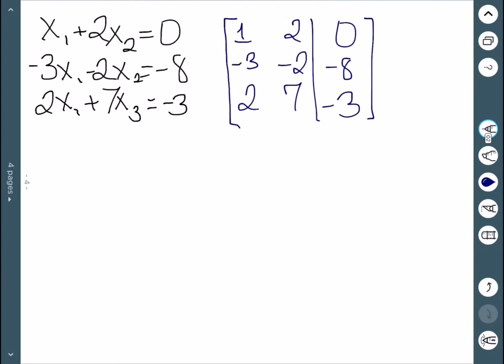Since we already have a 1 in the first row, first column, we need to get zeros underneath it. To get rid of the 3, we'll do 3 times row 1 plus row 2. And to get rid of the 2, we'll do negative 2 row 1 plus row 3.